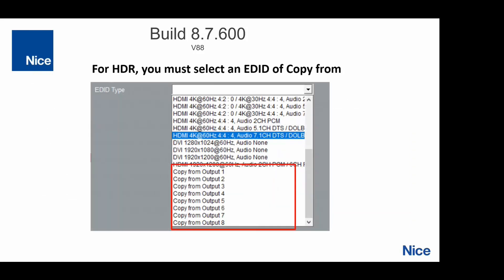One important thing to know: when you're doing HDR, which is only on the V88, you need to select 'copy from output' to get the right EDID. We'll look at doing something different in the future, but for right now, if you're doing HDR, you've got to select copy on the EDID.